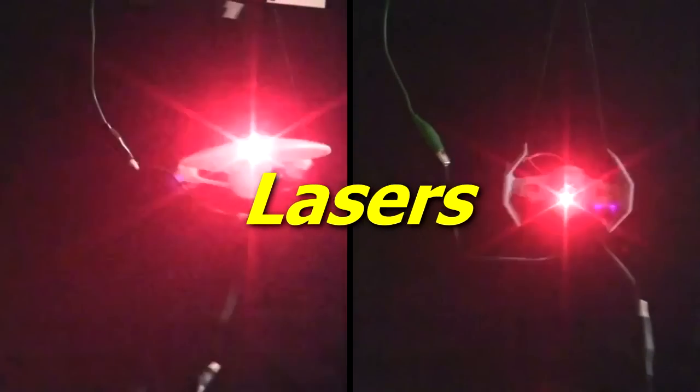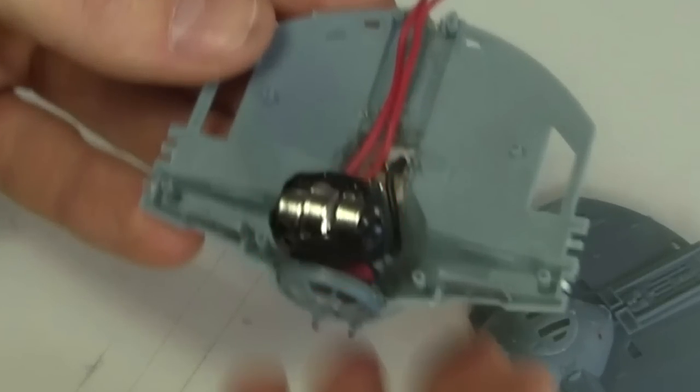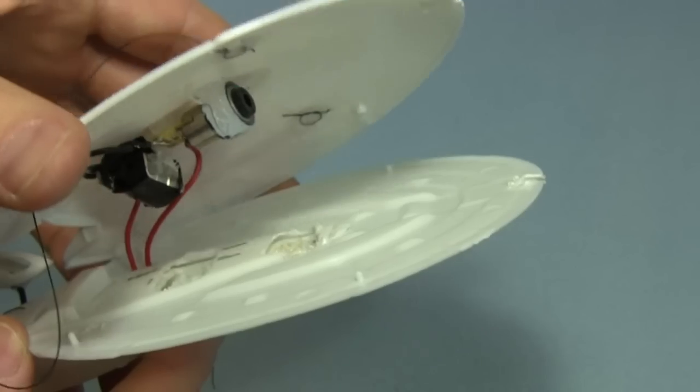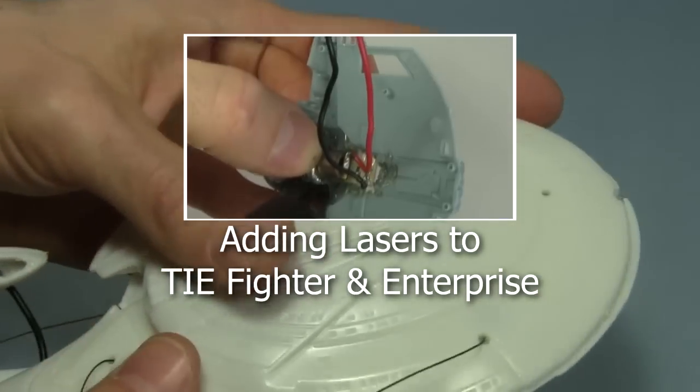As for the lasers, the laser for the TIE Fighter is in here where Darth Vader would normally sit. The laser for the Enterprise is inside the saucer. Click here to watch a video showing how I added the lasers to these models.